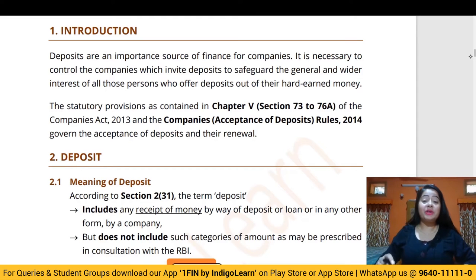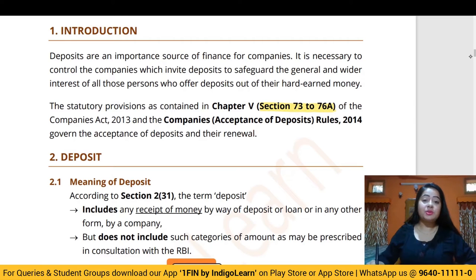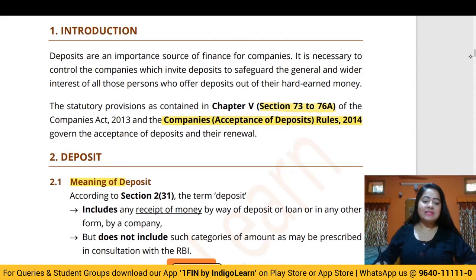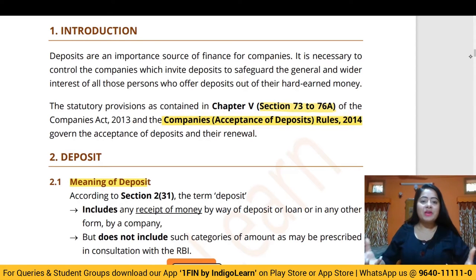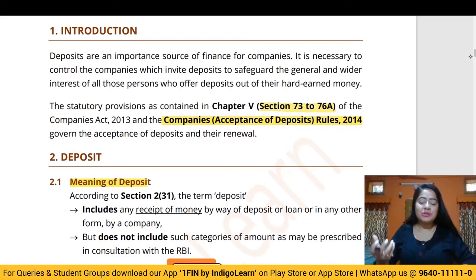Hello dear students, today we are going to be doing the Acceptance of Deposits chapter from the Companies Act, which is Chapter 5. We are going to be covering Section 73 to Section 76A, along with the Acceptance of Deposits Rules 2014. This chapter covers what deposits are, what kinds of companies can accept deposits, the maximum amounts, whether from members or the public, and the conditions companies must follow.